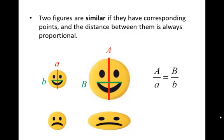This gives us a precise way of explaining why the two frowny faces are not similar. If we measure the same corresponding ratios, we see that A over a is 1, they're the same height, but big B over little b is 2. The second guy's frown is twice as big as the first guy's frown. They're not similar.